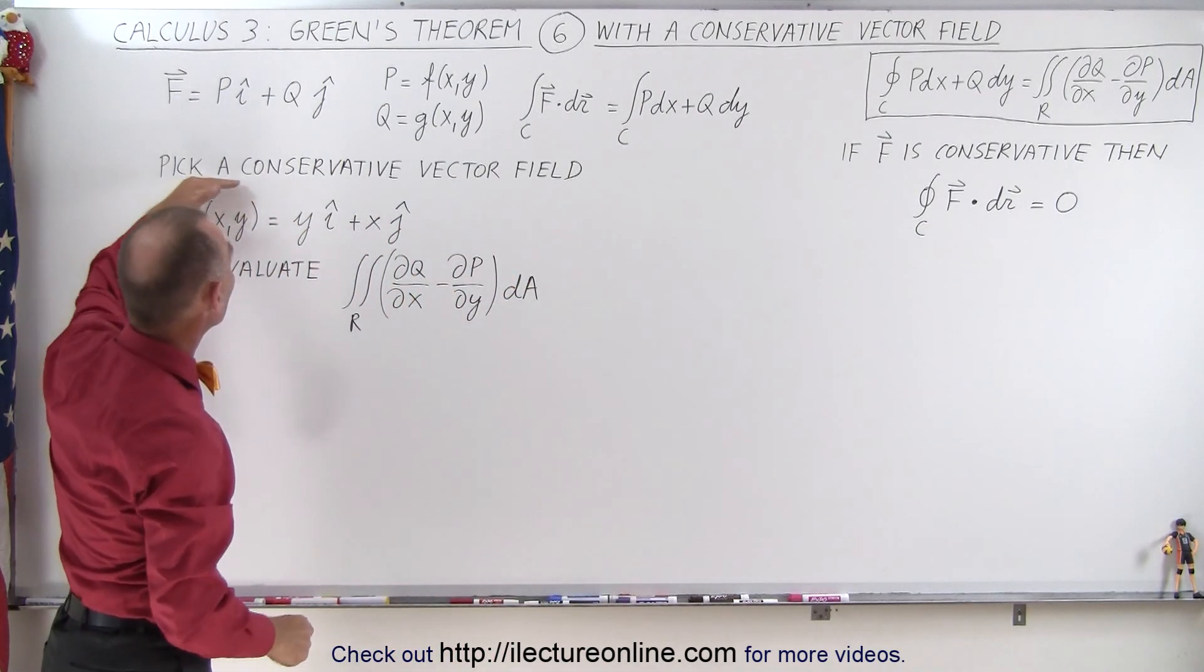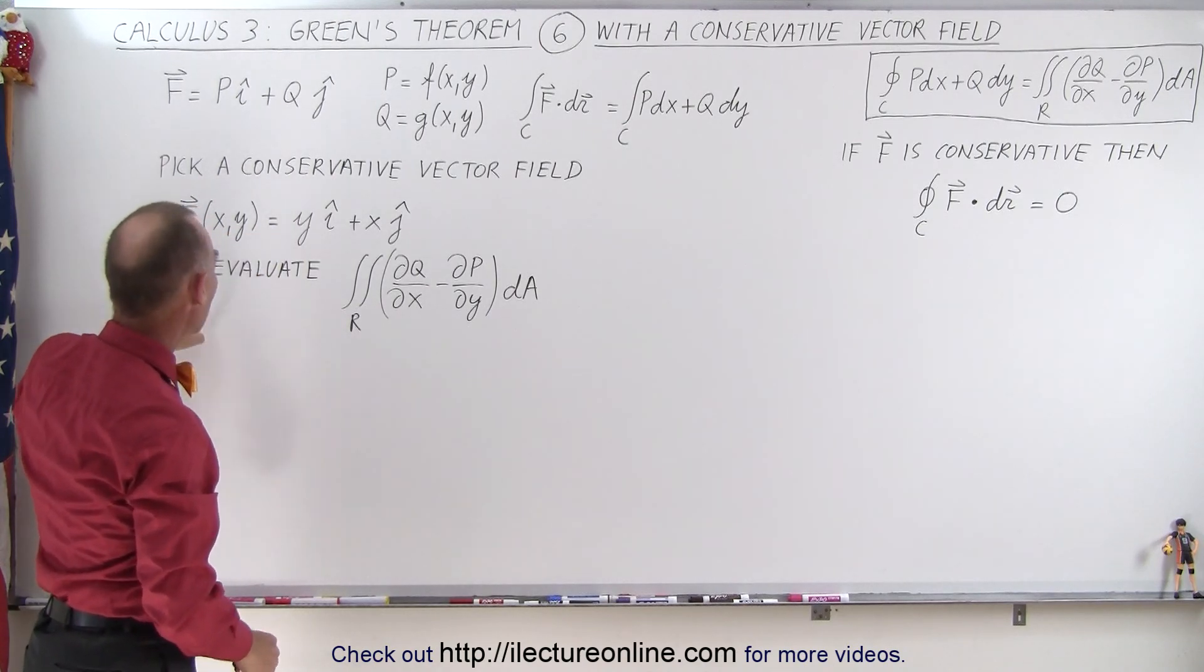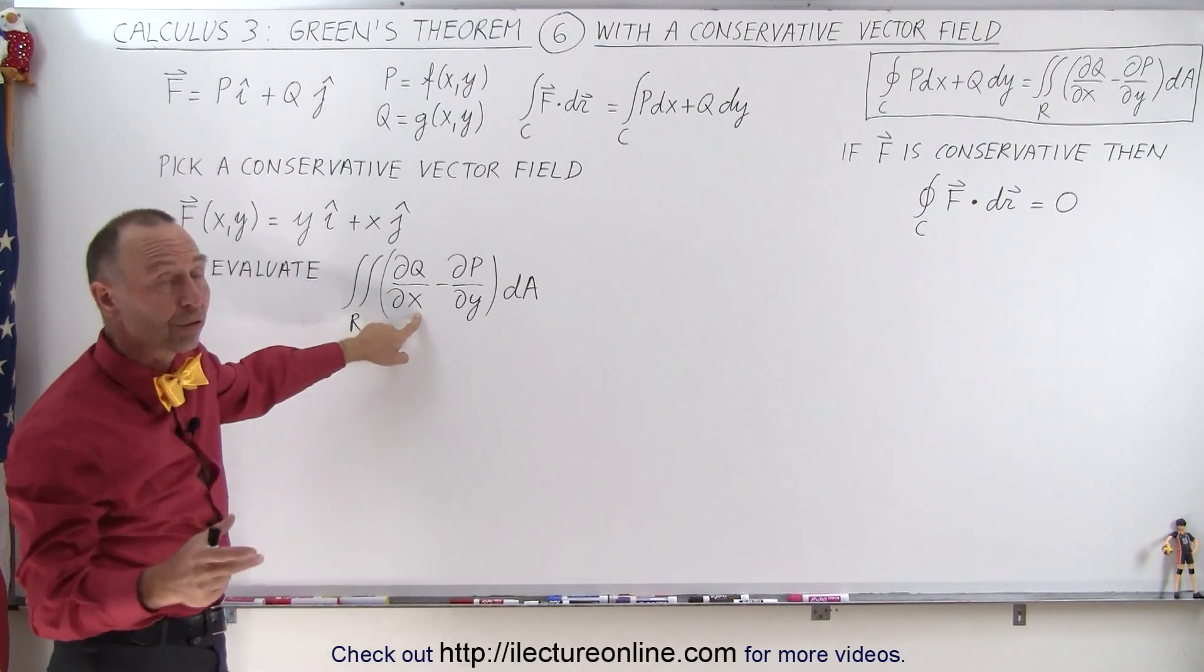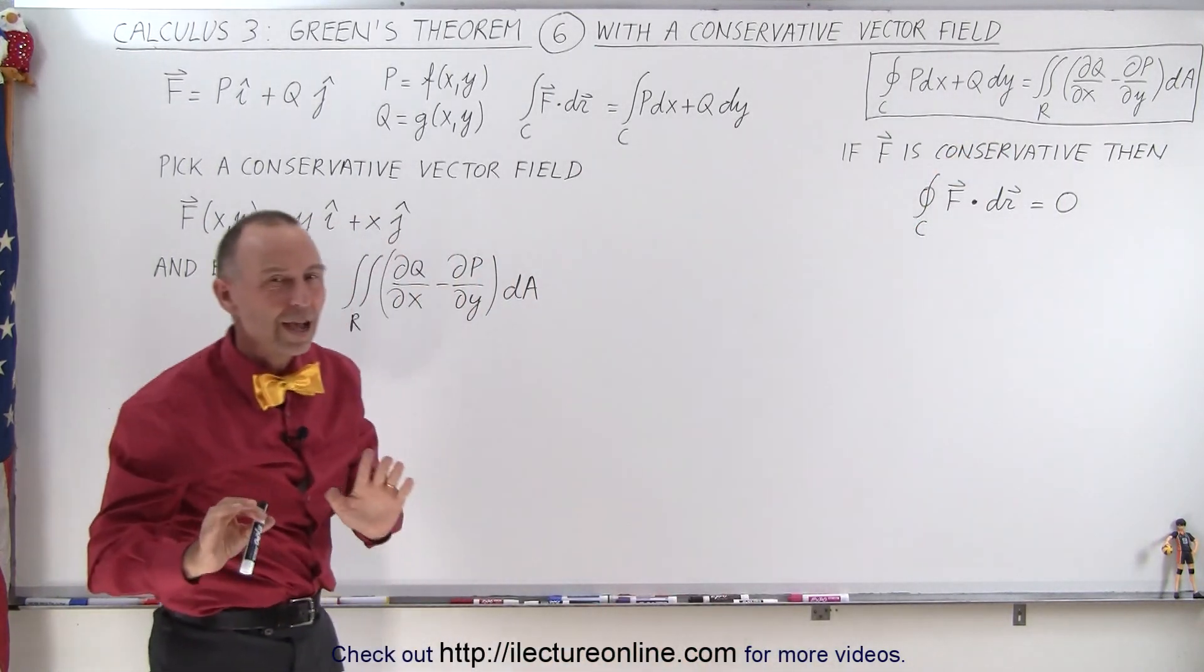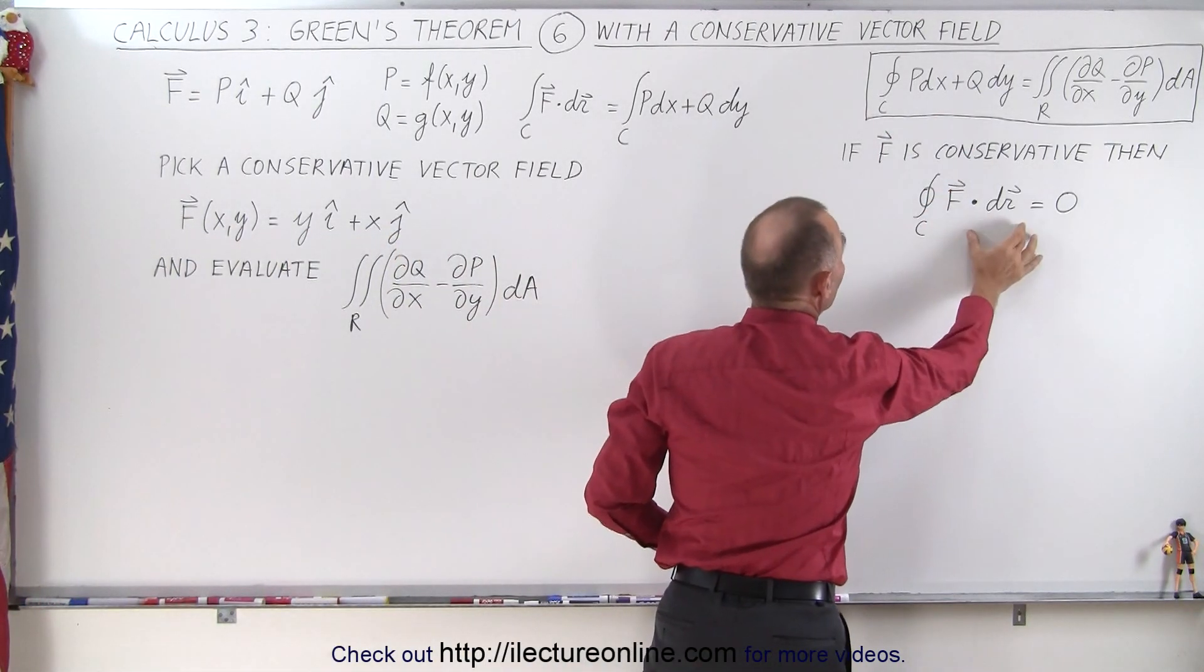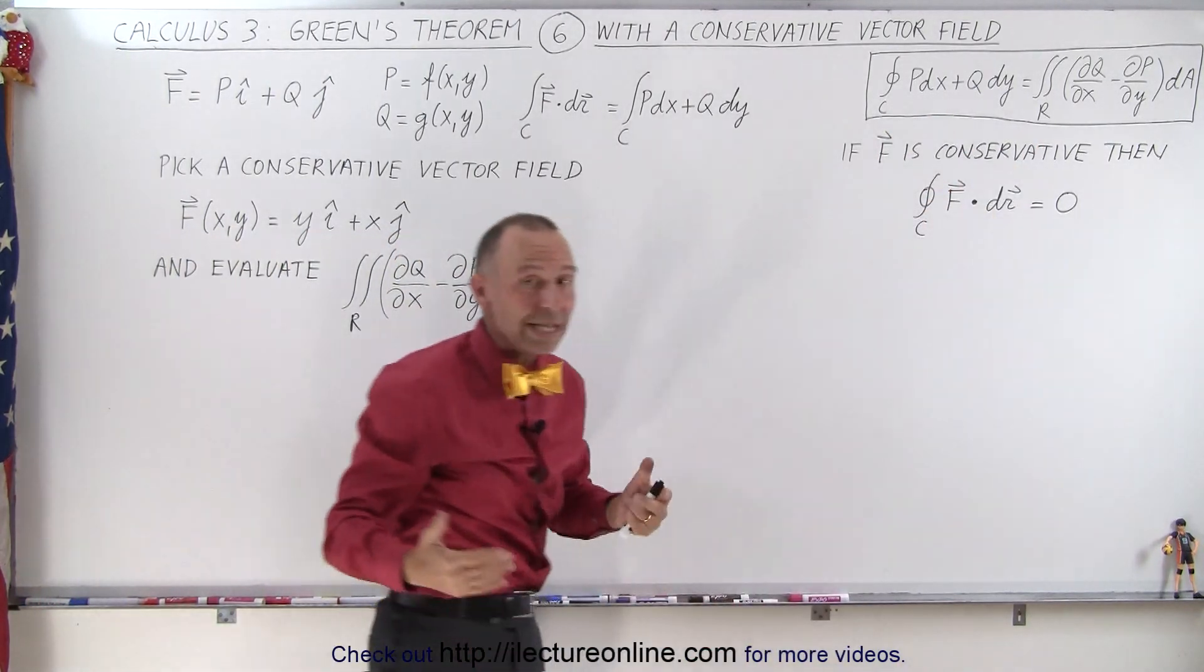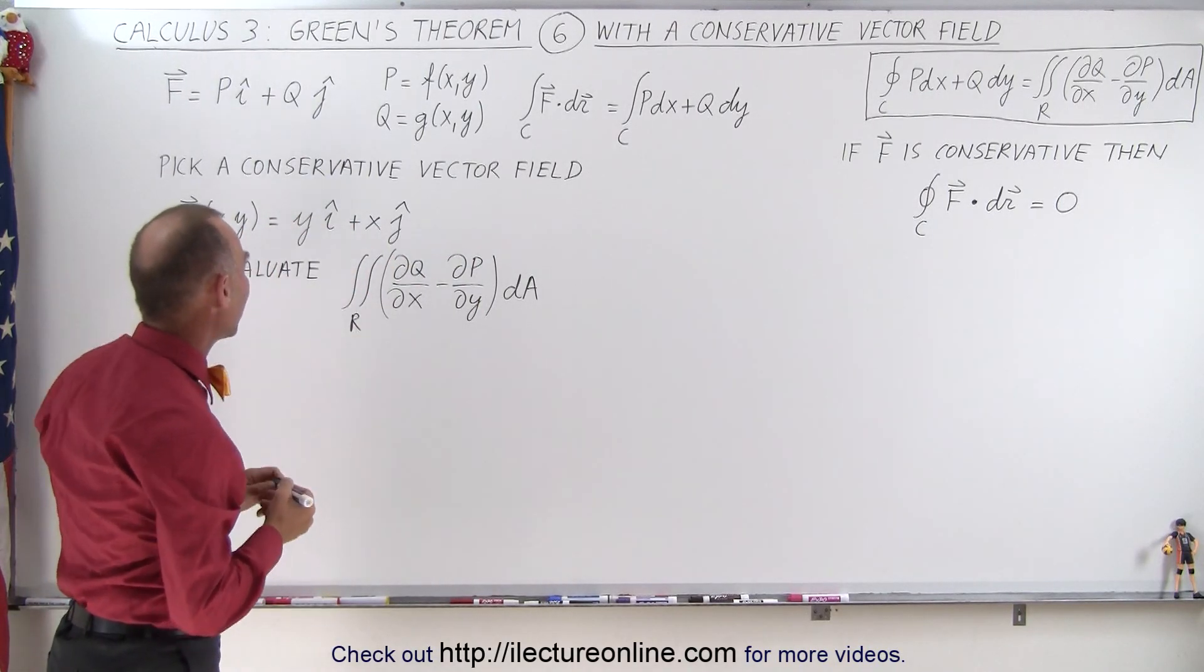Now if we pick a conservative vector field, here's a simple conservative vector field, and we evaluate this portion of Green's Theorem, the right side of the equal sign, you'll see how interesting that becomes. Because if the left side is going to be equal, then of course the right side must be equal as well with Green's Theorem. So let's go ahead and evaluate this.